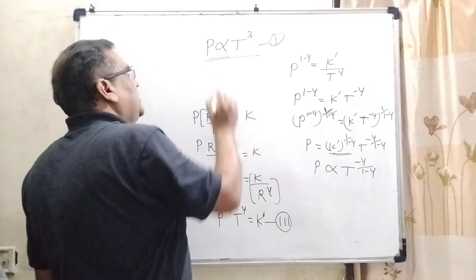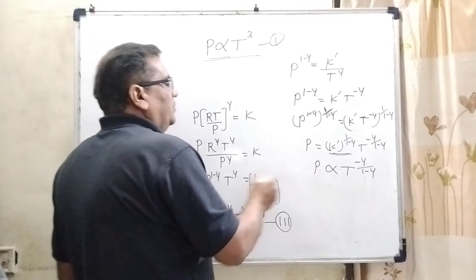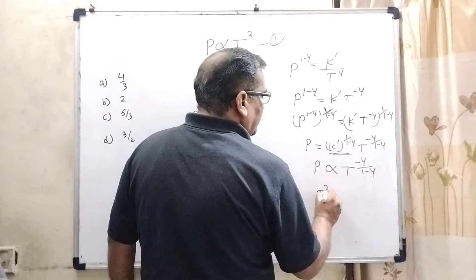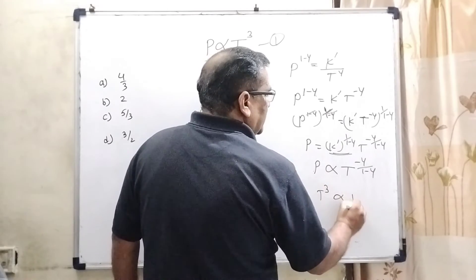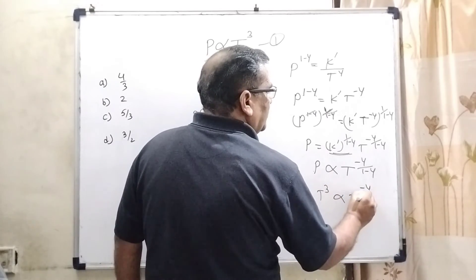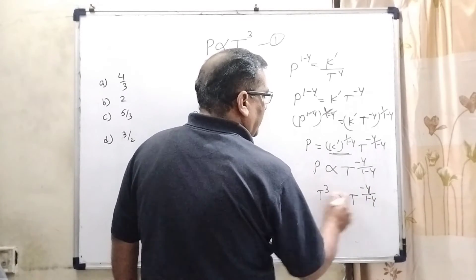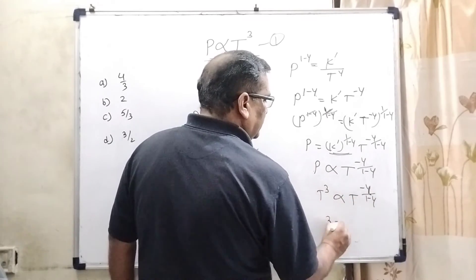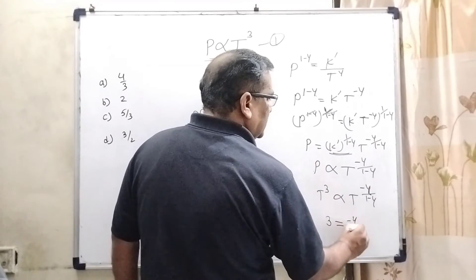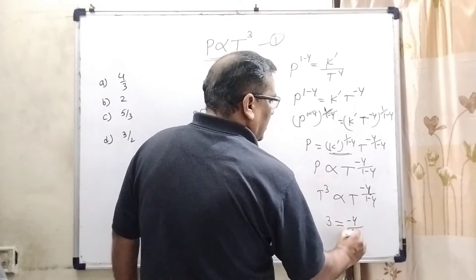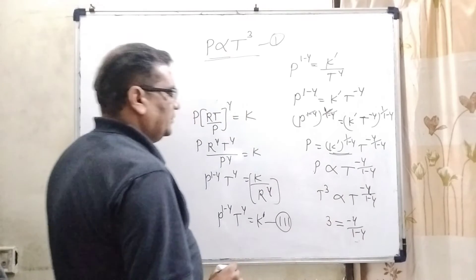But here, given in the condition, P is directly proportional to T cube. So therefore, T cube proportional to T raised to power minus gamma upon 1 minus gamma. So, comparing these powers, 3 equal to minus gamma upon 1 minus gamma.